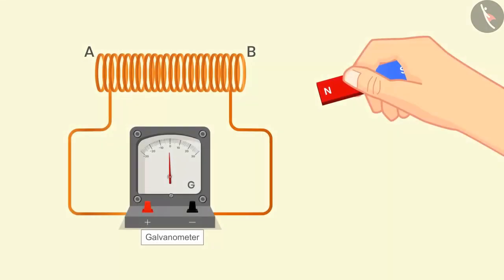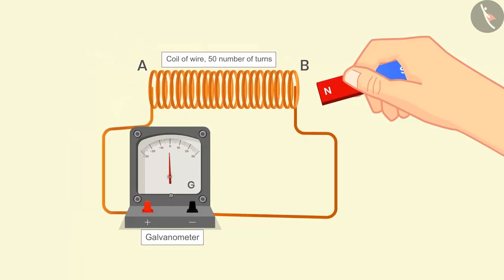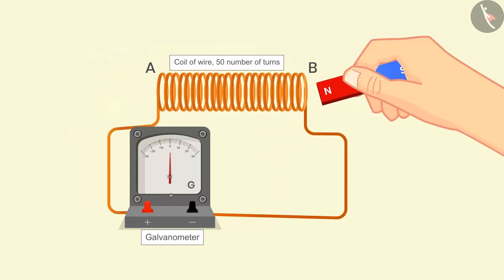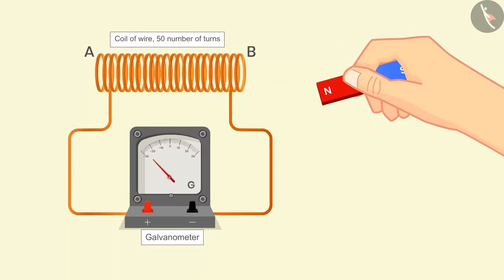In the second case we keep the magnet stationary and move one end of the coil towards the north pole of the magnet. Then the needle will show the deflection on the right hand side and will show deflection on the left side if we move coil away from the magnet.